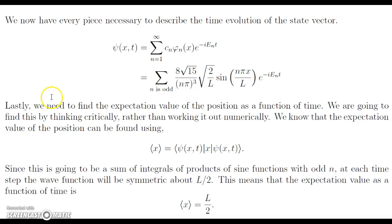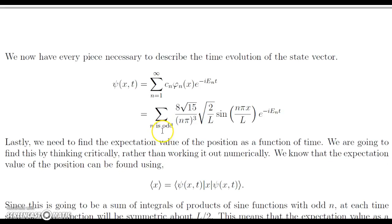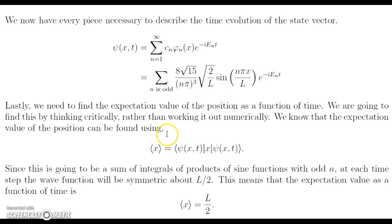And now that we have that, we could, of course, pull out some constants here, but we're going to just leave it like this. And now we need the expectation value of the position as a function of time. And to do this, we're going to note that we're only working with the odd terms here, and we can actually think critically about how this is going to work rather than working it out numerically. And the reason we want to do this is because as soon as we view this analytically or numerically and we set it up as an integral, we're going to have two infinite series inside an integral, and it's going to get very nasty. Instead, we're just going to note that since this is going to be a sum of integrals of products of sines, and each of these has an odd n term inside, the wave function is just going to be symmetric about L/2, and that's because of the odd n. We're going to have this anti-node at L/2 each time, and it's going to be symmetric about that point.